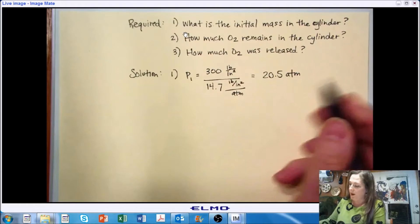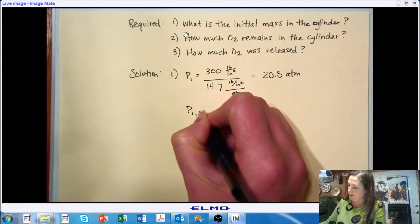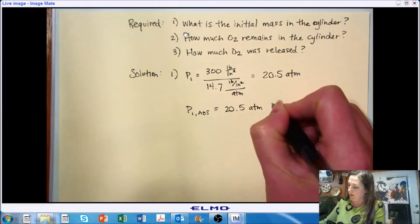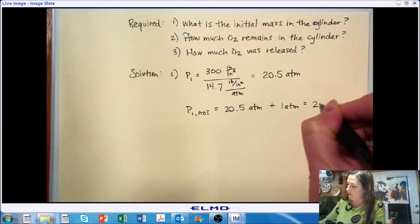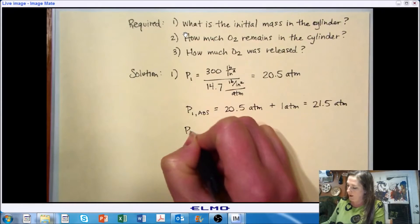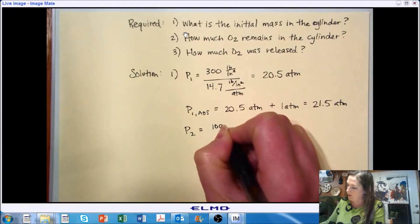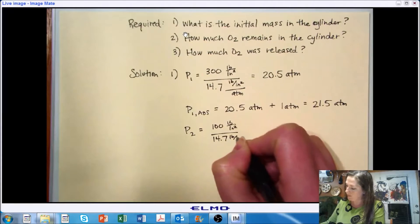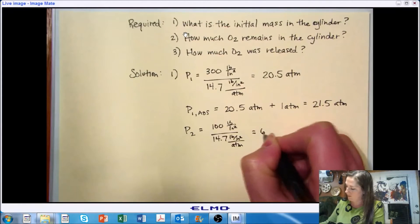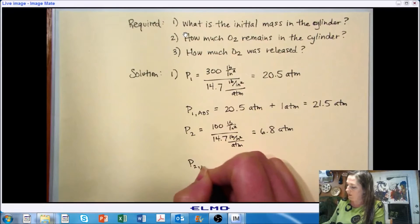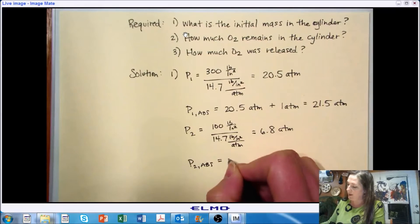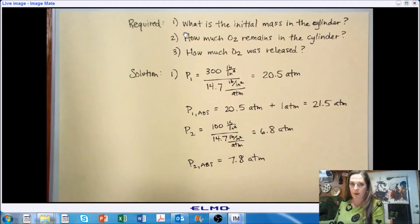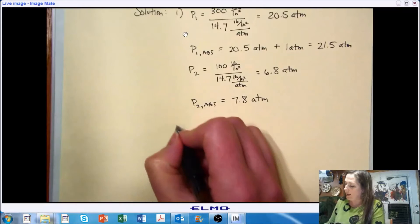So the pressure inside the cylinder is 20.5 atmospheres. But I need to get my pressure into an absolute pressure. And I know that my room is at one atmosphere. So I need to add that one atmosphere to get my absolute pressure. And then my ending pressure, I need to follow this same approach. And I get that the absolute pressure of the cylinder after we've released is at 7.8 atmospheres.